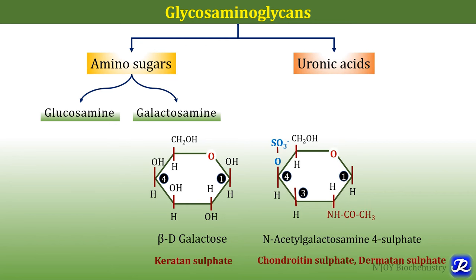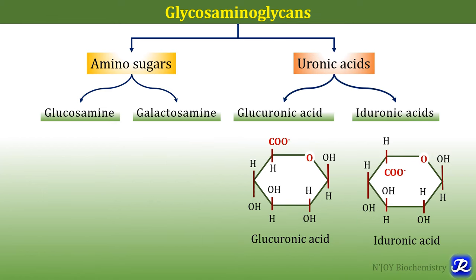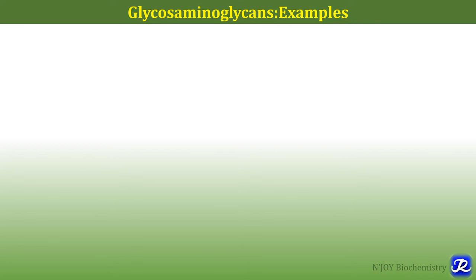N-acetylglucosamine is present in two glycosaminoglycans: chondroitin sulfate and dermatan sulfate. The uronic acids present in glycosaminoglycans are glucuronic acid or iduronic acid. There is a difference in the position of the carboxylic group between glucuronic acid and iduronic acid — it is L-iduronic acid and D-glucuronic acid. So glycosaminoglycans are linear, unbranched, negatively charged heteropolysaccharide chains made up of repeating disaccharide units containing amino sugar and acidic sugar or uronic acid. Examples are hyaluronic acid, chondroitin sulfate, keratan sulfate, heparin, heparan sulfate and dermatan sulfate.